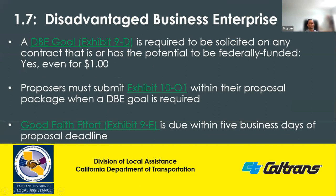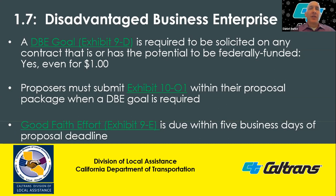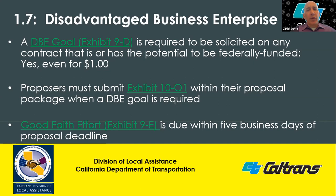Section 1.7 of the Contract Manager Quick Reference Guide covers the Disadvantaged Business Enterprise briefly. We suggest going to LAPM Chapter 9 for more detailed information. For any federal aid contract, even if it has as little as $1 of federal funding, or if there is the potential for it to be federalized, the entire contract is considered to require the DBE goal. Even if it is as little as $1, it does need to have a DBE goal.